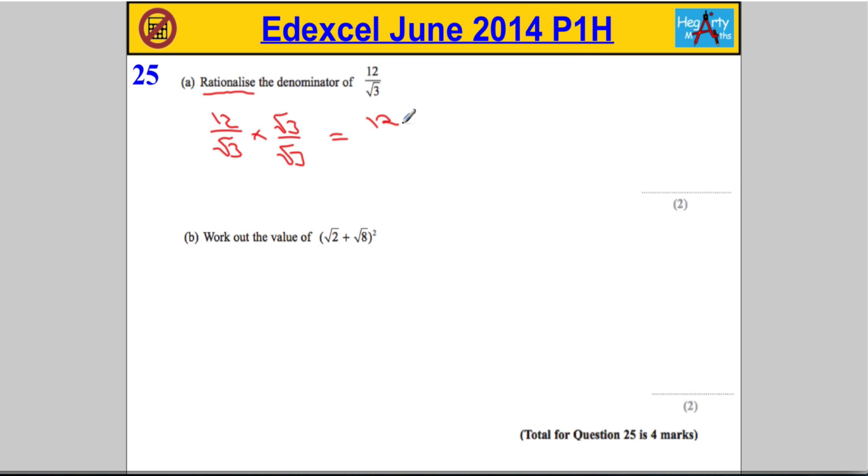Okay, so the top is going to become 12 root 3, and the denominator root 3 times root 3 is 3. And then finally, you're going to have to cancel 3 goes into 12 four times. So, when that cancels into that four times, we get 4 root 3 for our answer.